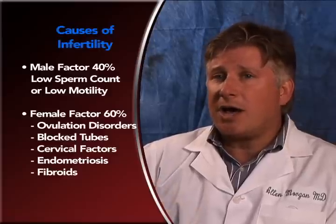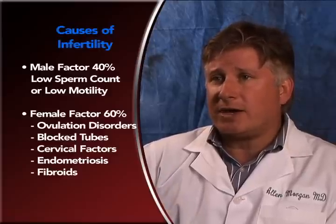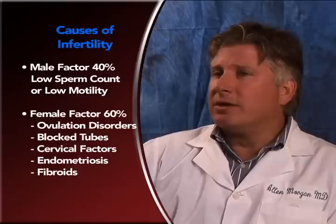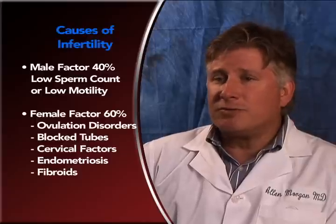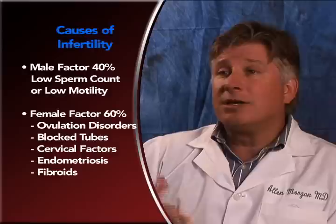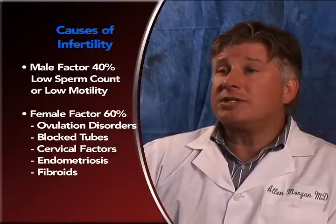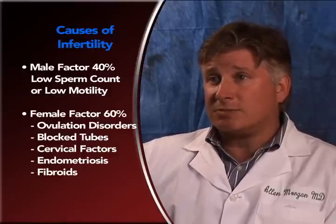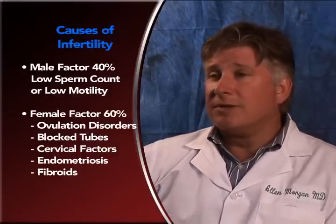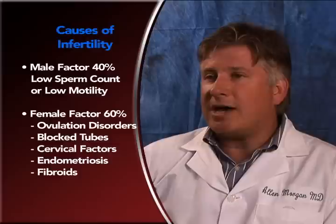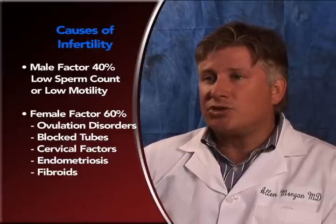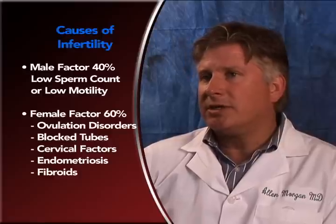One of the most common female factors is ovulatory dysfunction, which means a woman is not having a period every month — maybe every two or three months. That's pretty easy to treat. The most common treatment is usually Clomid.